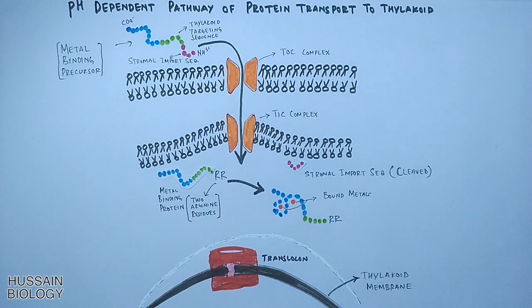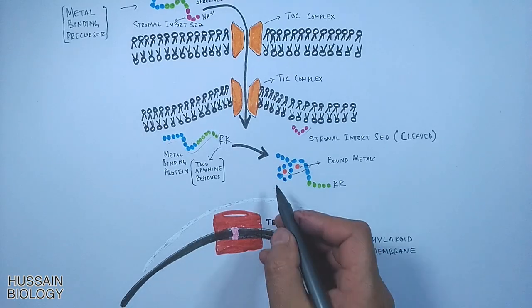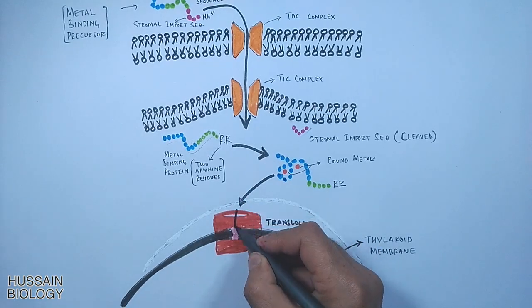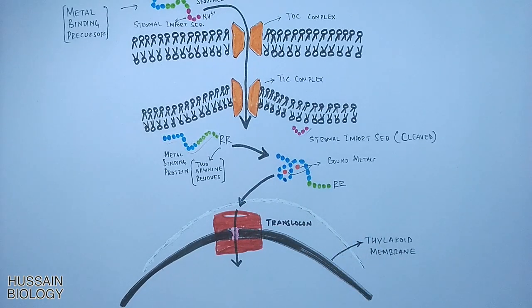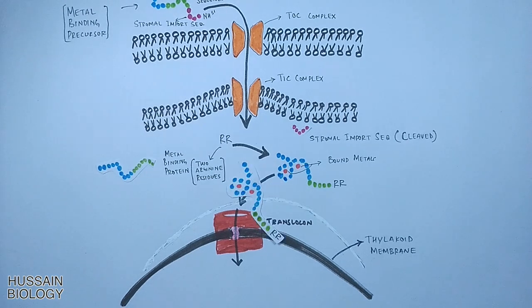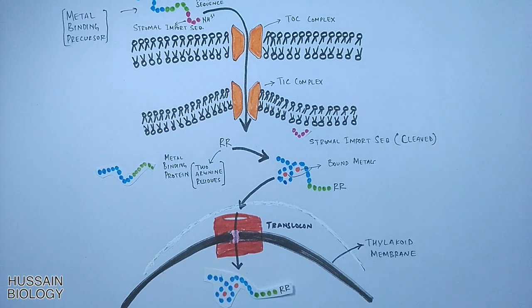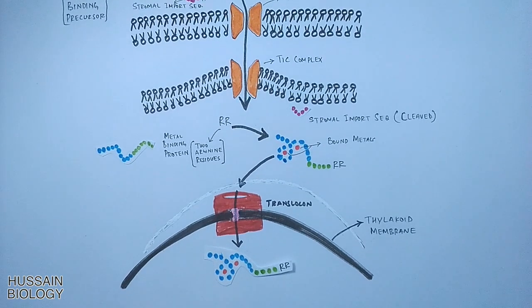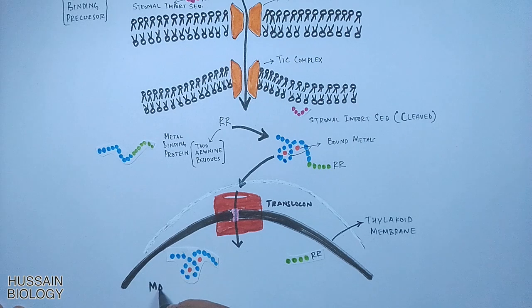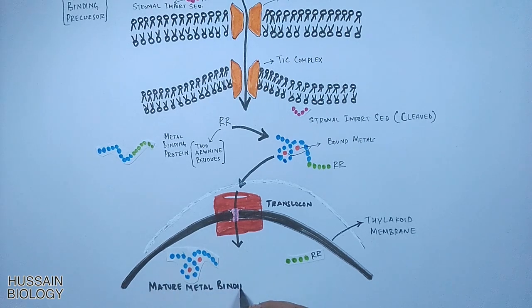Then the metal binding protein passes through the translocon present on the thylakoid membrane, directing the protein into the lumen of the thylakoid. Here in the lumen, the thylakoid targeting sequence is cleaved off, as shown in the diagram, and finally we get the mature metal binding protein in the thylakoid lumen.